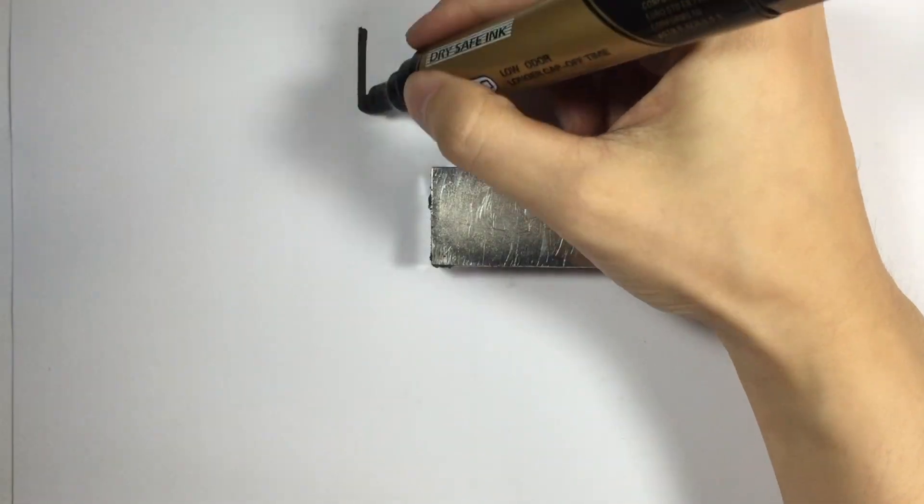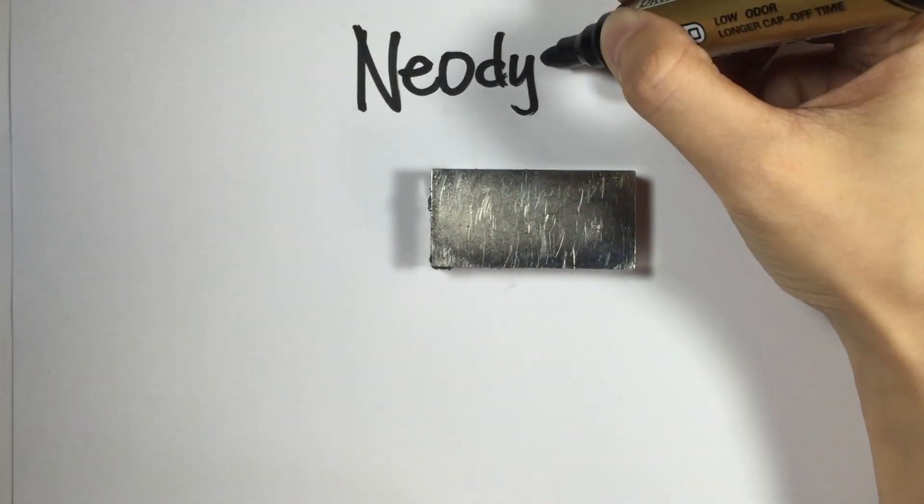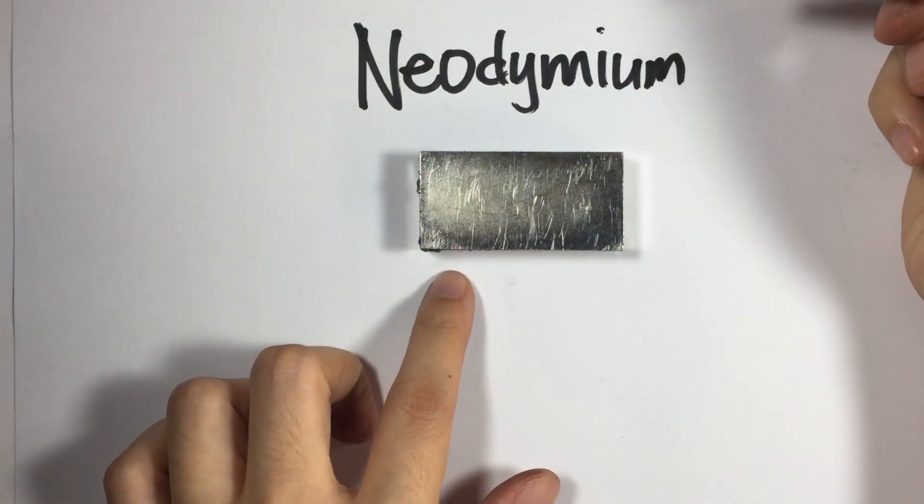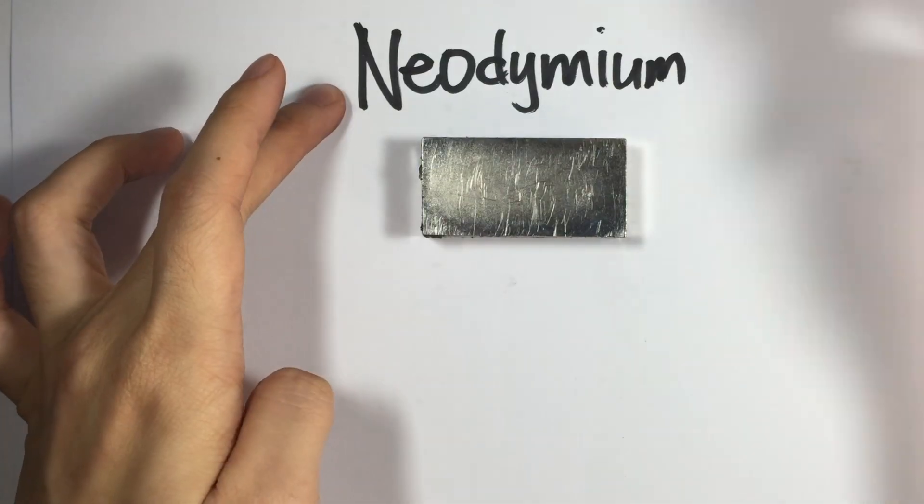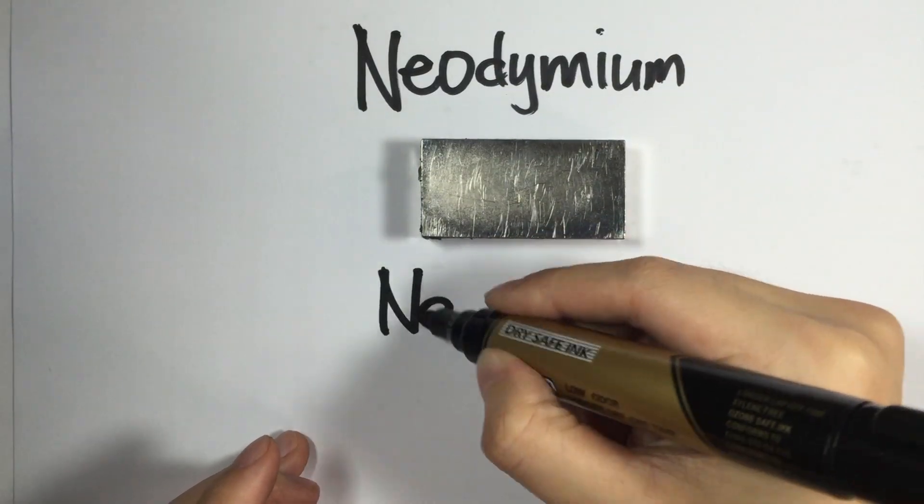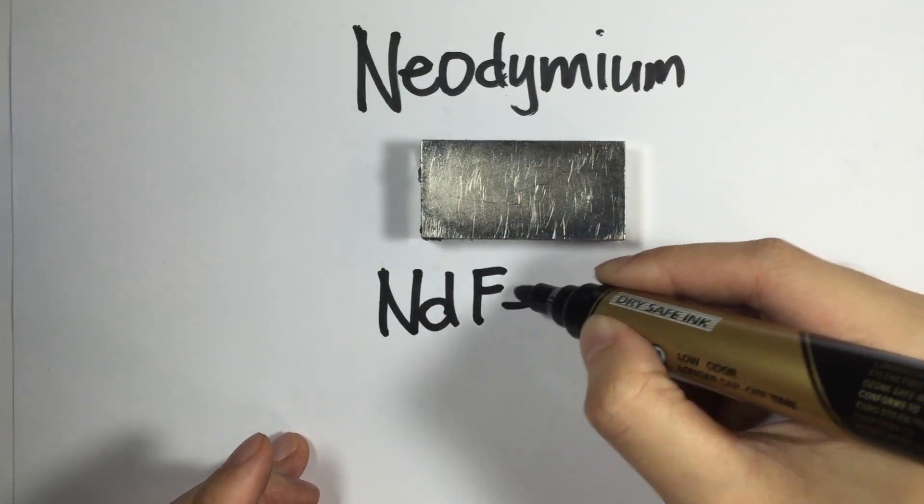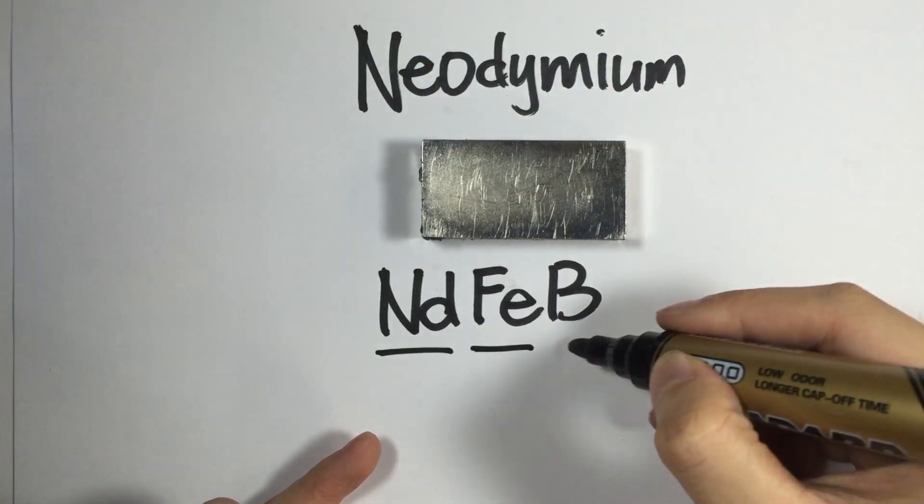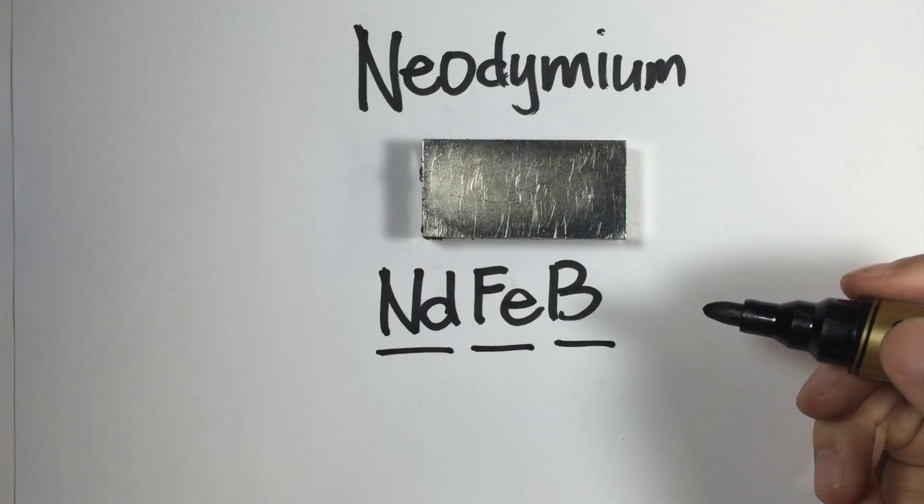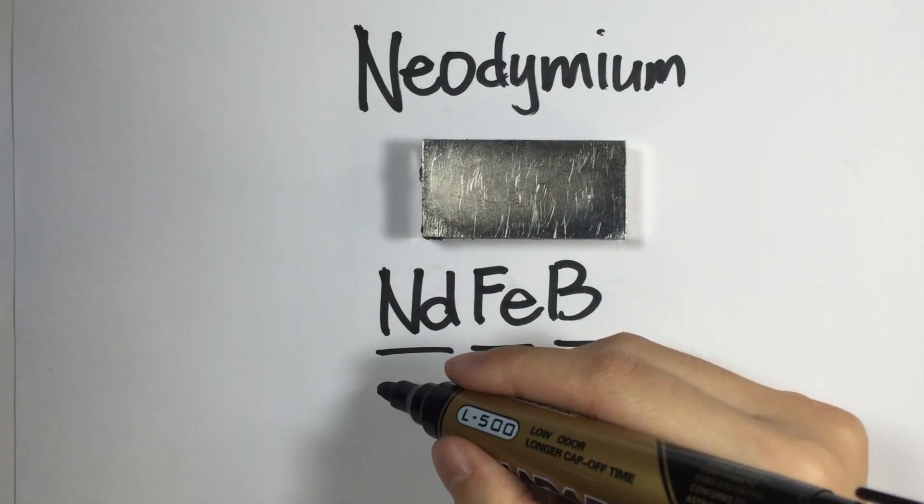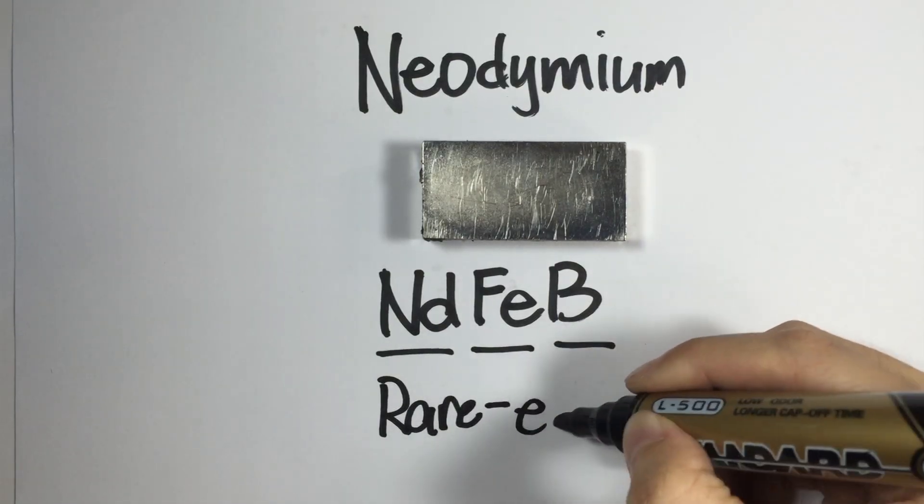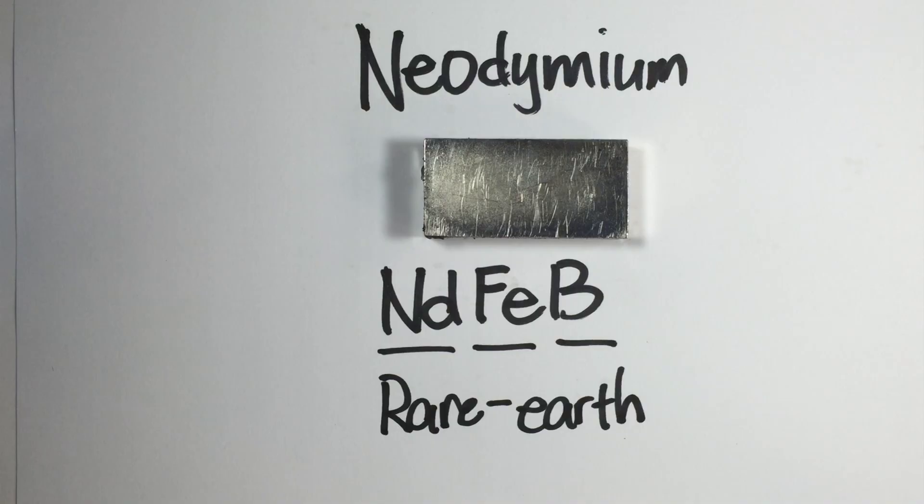So in case you're wondering, the neodymium magnet is spelled out like this. And there are lots of terms for it. It's the strong magnet, the neodymium magnet. Sometimes you'll see it being called as the NdFeB magnet. That's because it's composed of neodymium, iron, and boron. And sometimes it's also being called as a rare earth magnet, because it's being produced with rare earth raw materials.